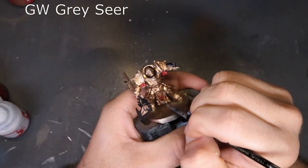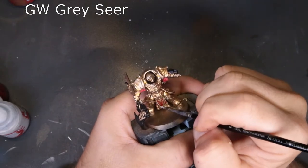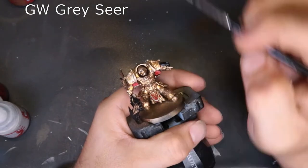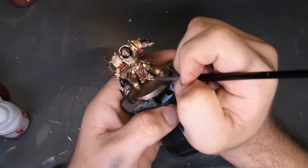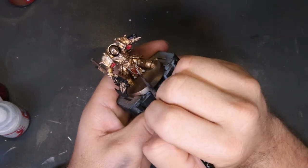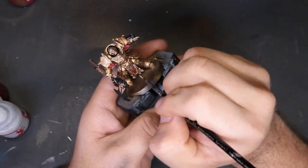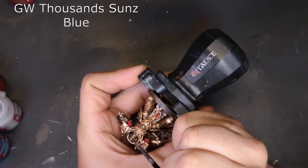So for the robes on his loincloth, we come through with Grey Seer. Honestly, this color is all but replaced Celestra Grey in my book. It's a little bit different color, but at the exact same time, it's just got such good coverage that I definitely recommend adding this to your arsenal in place of Celestra Grey.